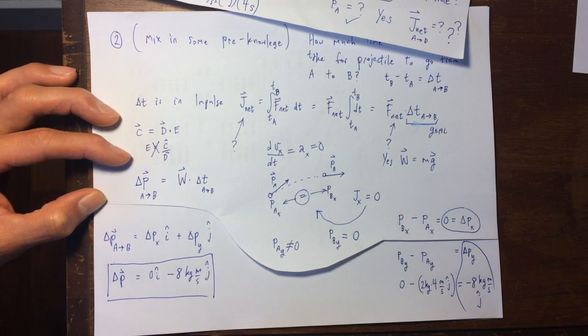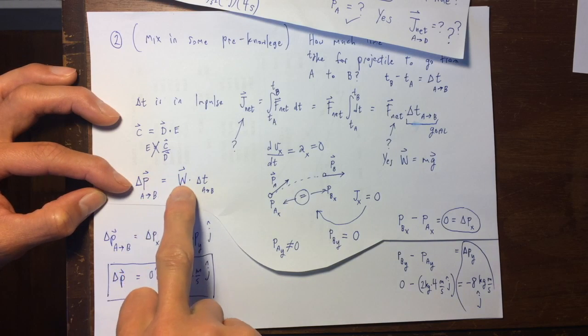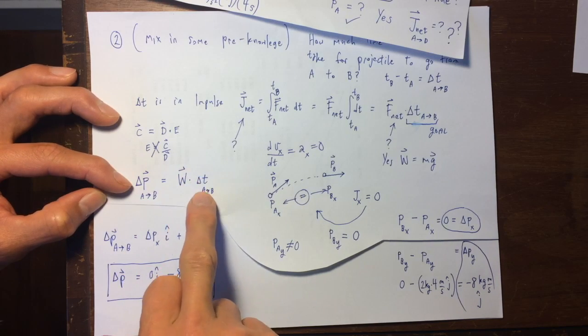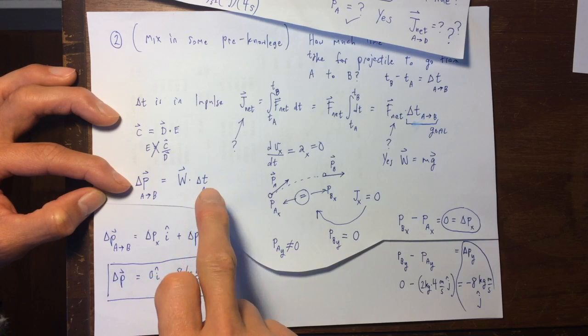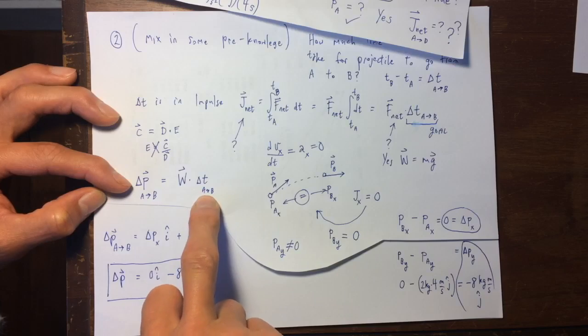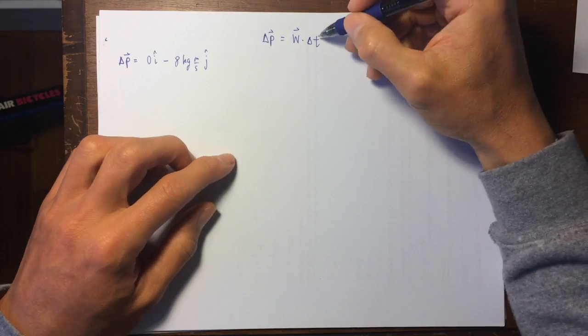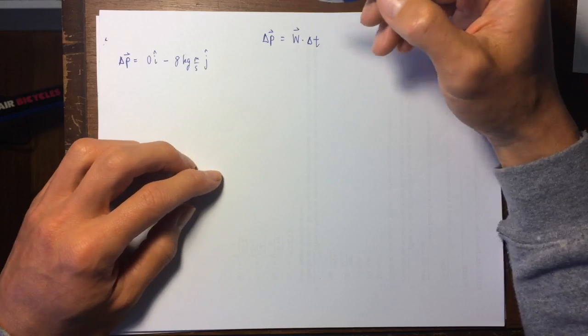So delta p from time a to time b is equal to delta p in the x direction from a to b, that's the i hat component of the change in momentum vector, and delta p in the y direction j hat. Delta p does not change in the x direction, so it's zero i hat, and delta p though in the y direction has a change of negative eight kilograms meters per second j hat. So here is delta p. Okay, this is very nice, because now we have, we know this, we know that, but we want to know this. So we almost know everything except for what we want to know.